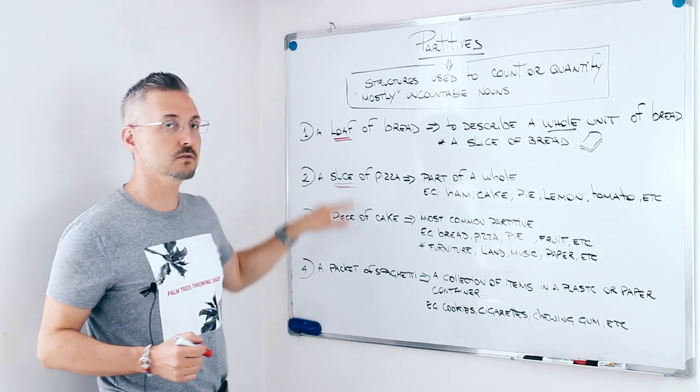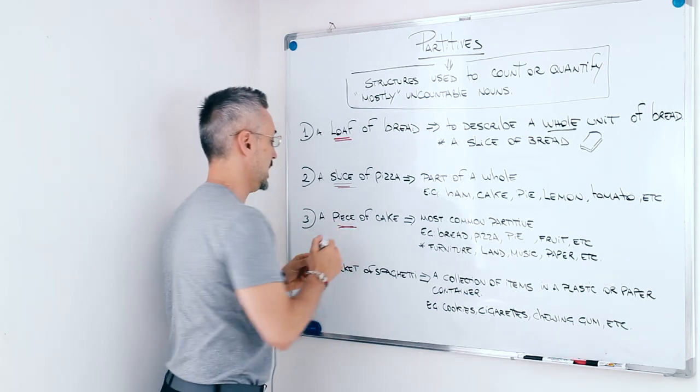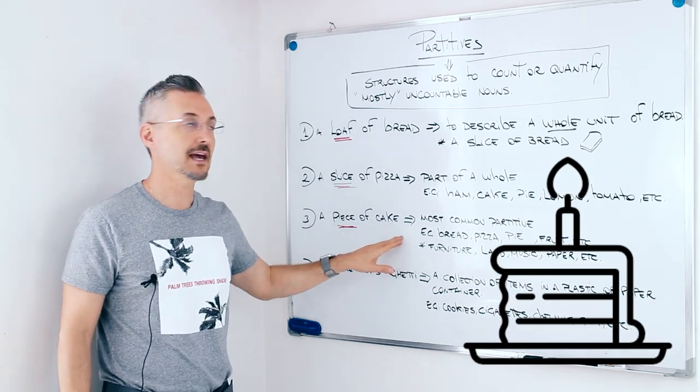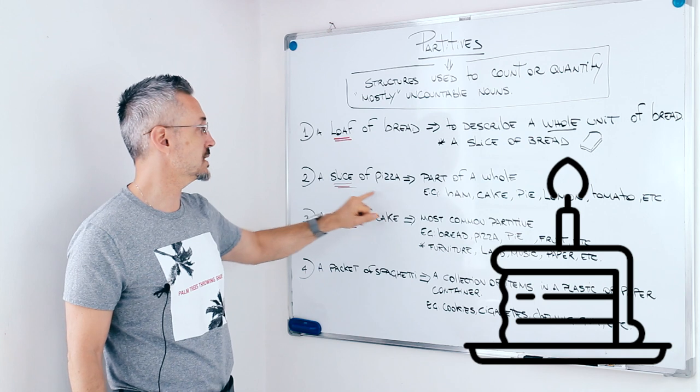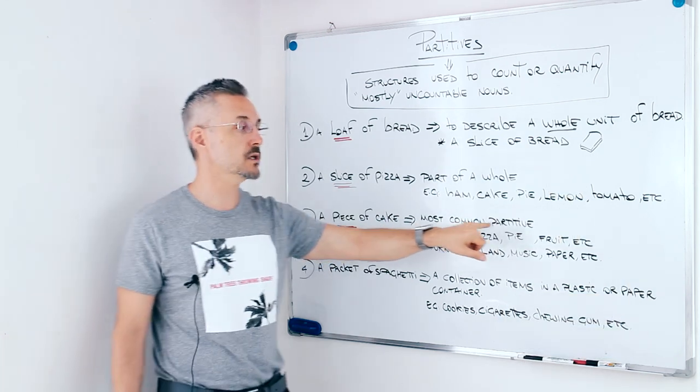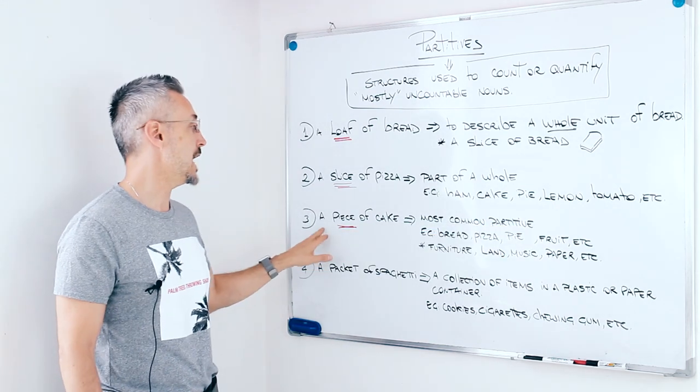Now, let's go to the third example. A piece of cake. As I said, we can say also a slice of cake, but a piece of cake is the most common partitive. So, a piece.